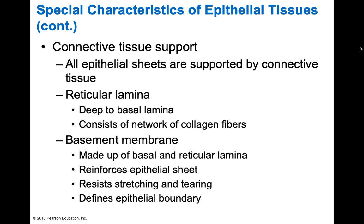All epithelial tissues are supported by connective tissues. Think about the skin on the outside of your body — it doesn't have a whole lot of structure on its own. The connective tissue helps to support these sheets. You have your reticular lamina deep to the basal lamina, which consists of a network of collagen fibers — collagen being the most abundant protein in the body. You also have a basement membrane made up of the basal and reticular lamina. It reinforces the epithelial sheet, helps resist stretching and tearing, and defines the epithelial boundary.